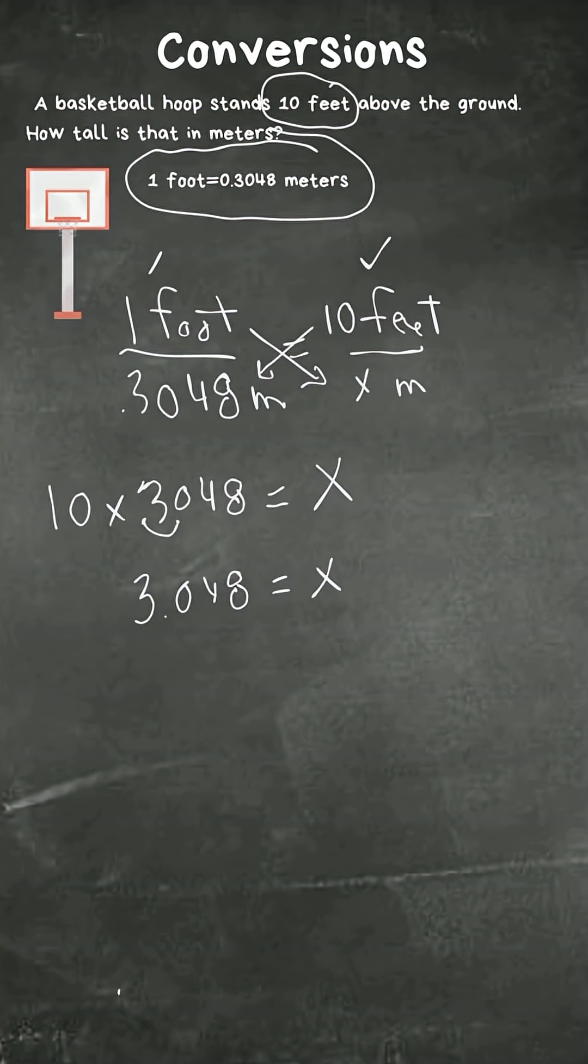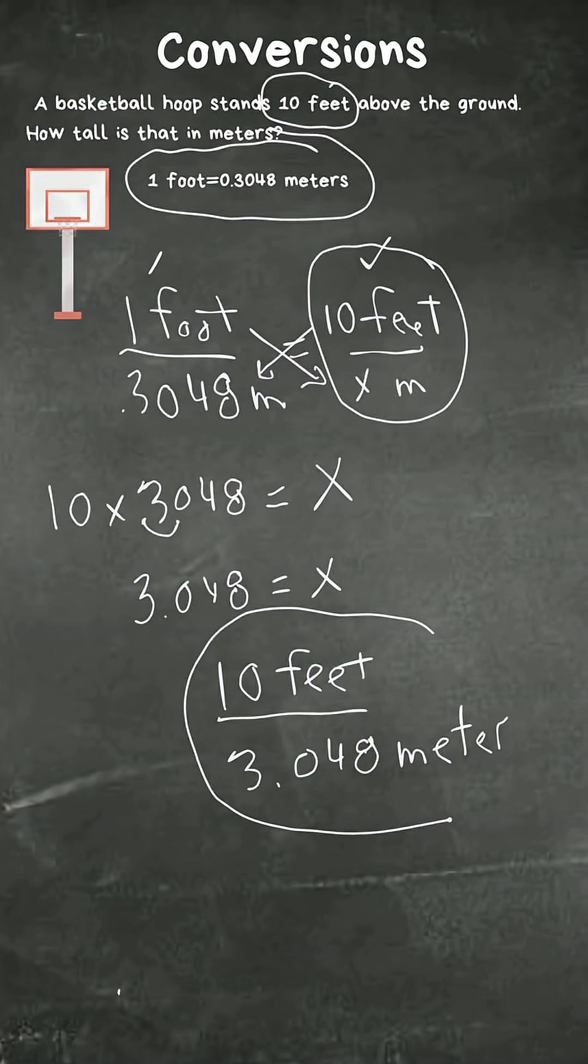So now let's plug it into this ratio right here: ten feet is 3.048 meters. So basically, 10 feet is roughly 3 meters. I hope that was helpful.